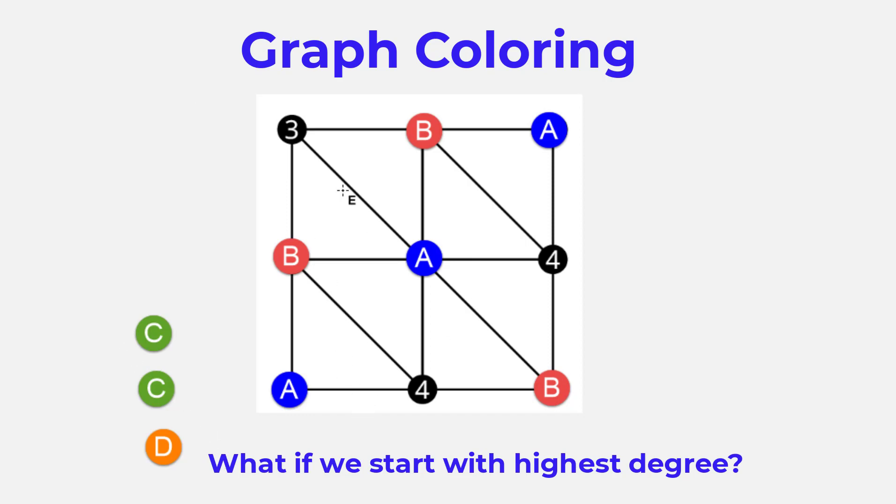Now we're going to move on to the next color. Out of the three remaining vertices, we have one of degree three and two of degree four. So we're going to go with one of the higher degrees. I'm going to go with the four on the right. But we can also color the four on the left because it's not adjacent to that green one. And in fact, we could also color the vertex of degree three. We can color that green as well.